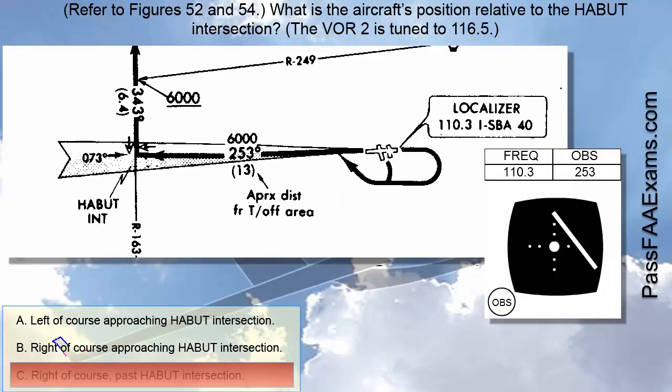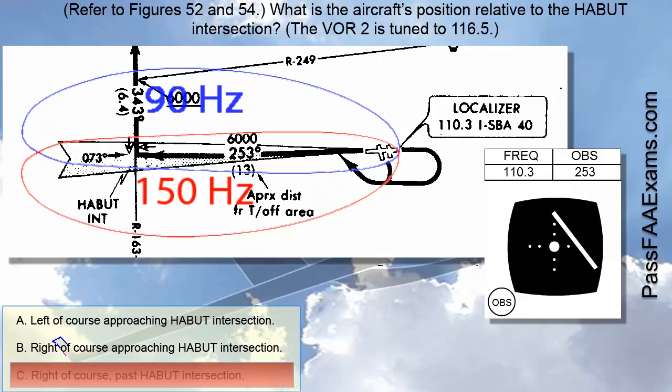Now, for the localizer itself, you have to understand that it does not behave like a VOR at all. While you can track a VOR, meaning you are able to intercept a desired radial, a localizer allows you to only intercept one course, the one that will lead you to the runway. The localizer antenna sends out two signals, one modulated at 90 Hz, and the other modulated at 150 Hz.